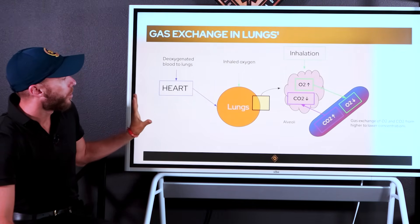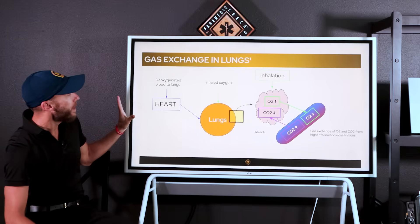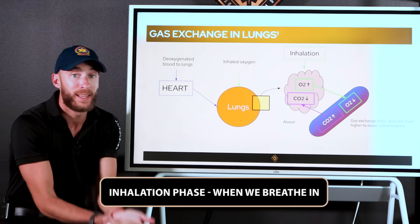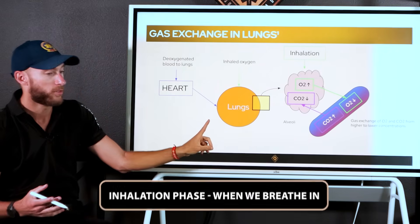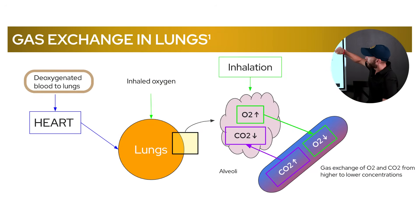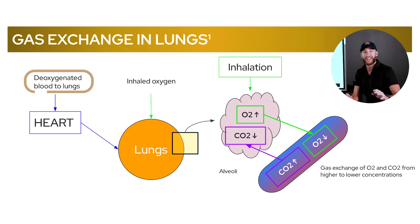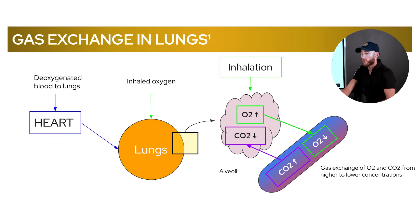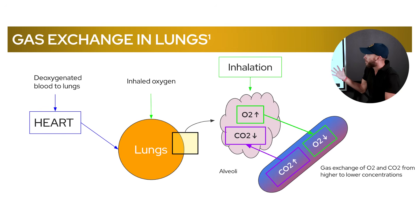Now we're going to go through the inhalation step. Here we have gas changes to the lungs — I'll show you the inhalation phase when we breathe in oxygen. What we have here is deoxygenated blood going to the lungs. On the right side of the heart is deoxygenated blood — blood returning from the venous system. The oxygen has already been dropped off at the cells. Blood returns to the heart through the right atrium, right ventricle, through the pulmonary artery, ending up in the lungs to pick up oxygen for the next pump.